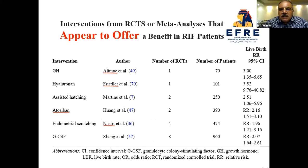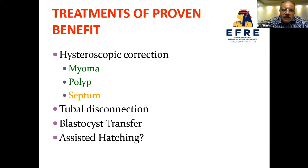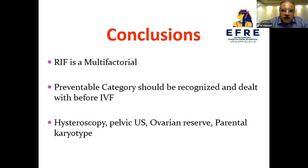In summary, this table demonstrates interventions from randomized controlled trials or meta-analyses that appear — and it is very important to remember the word 'appear' — to offer a benefit in RIF patients. These include growth hormone, hyaluronic acid, assisted hatching, atosiban, endometrial scratching, and G-CSF. Treatments of proven benefit in reality include only hysteroscopic correction for myoma, polyp, and septum; tubal disconnection; blastocyst transfer for natural selection; and possibly assisted hatching.